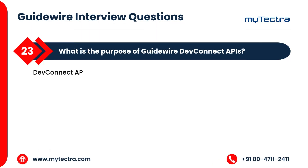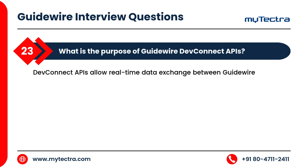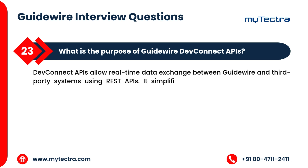What is the purpose of Guidewire DevConnect APIs? DevConnect APIs allow real-time data exchange between Guidewire and third-party systems using REST APIs, simplifying integrations for modern digital ecosystems.